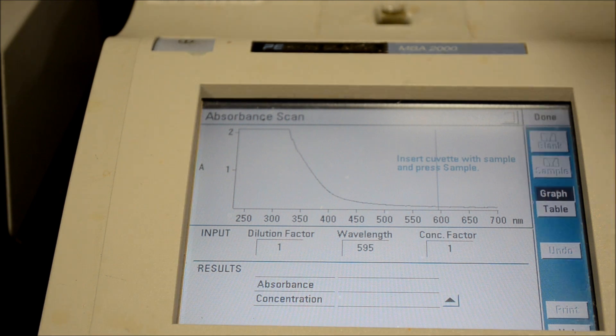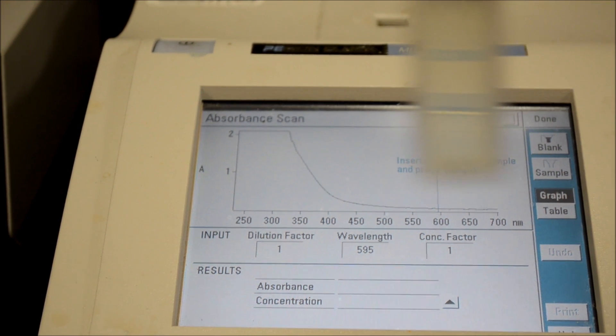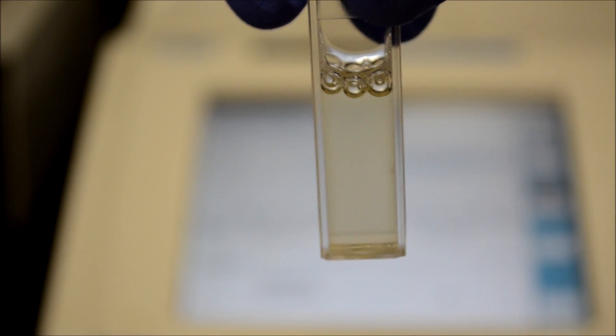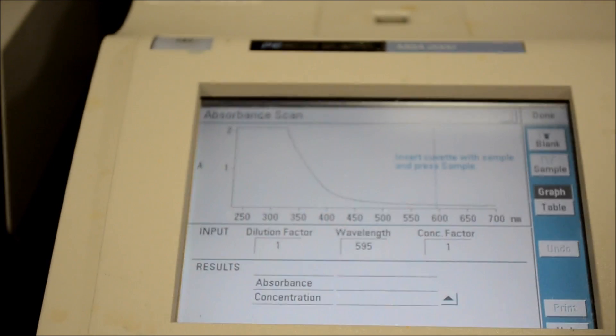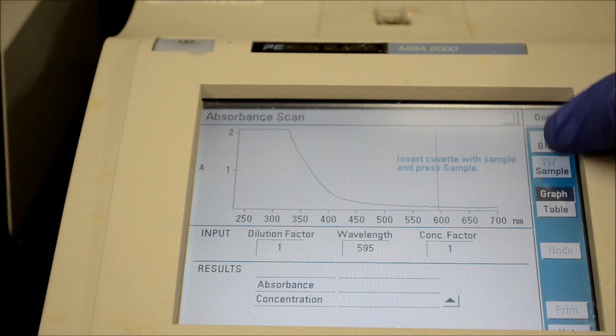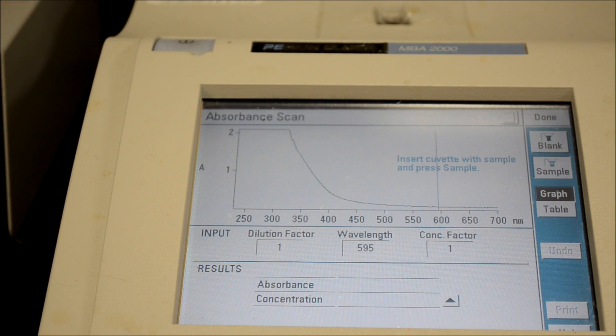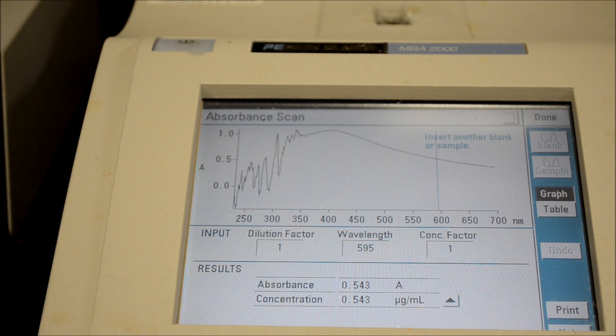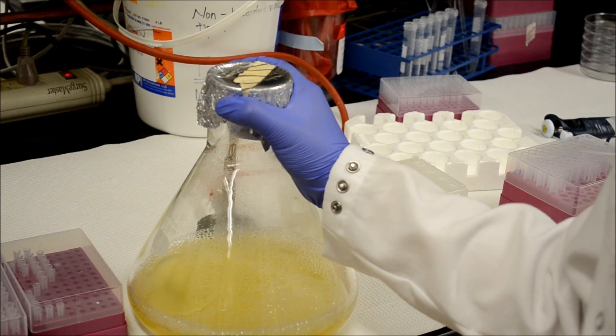After it's read the baseline, take out the blank and now place the sample in the cuvette with the bacterial culture. You can see here that it is cloudier than the blank, meaning that your bacteria has indeed grown. Now press sample and wait for the machine to read the sample. You can see here that the absorbance is 0.5, which is perfect for what we need.